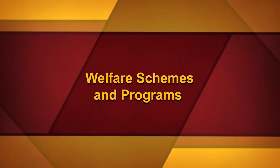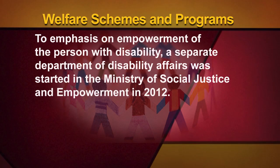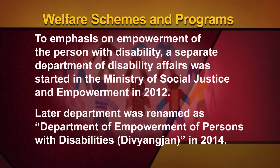To emphasize the empowerment of persons with disability, a separate Department of Disability Affairs was started in the Ministry of Social Justice and Empowerment in 2012. Later, the Department was renamed as the Department of Empowerment of Persons with Disabilities in 2014. The main vision of this Department is to build an inclusive society which provides equal opportunities for the growth and development of persons with disabilities.